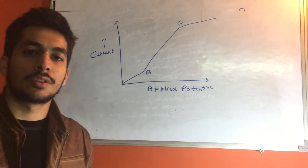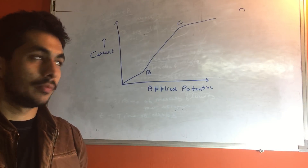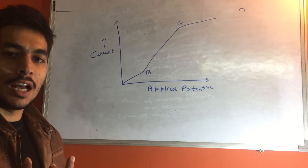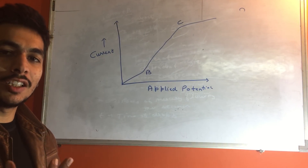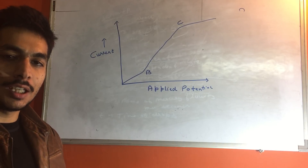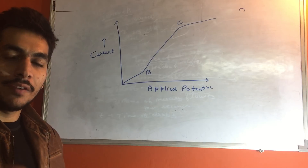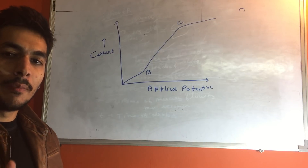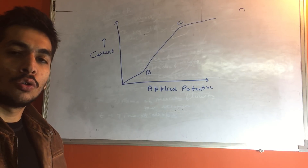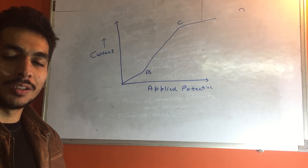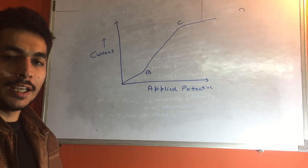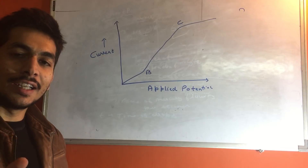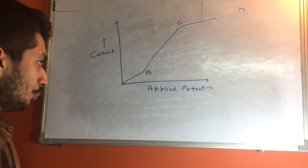Now we are going to study about the half wave potential. It is a technique from which we can have qualitative analysis — that is, what kind of analyte is present. In the previous video we discussed quantitative analysis, that is how much of the analyte is present. For example, if we have cadmium, we want to know whether cadmium is present or not, or what kind of metal is present — it could be zinc, nickel, or any analyte. We find this out with the help of the half wave potential.